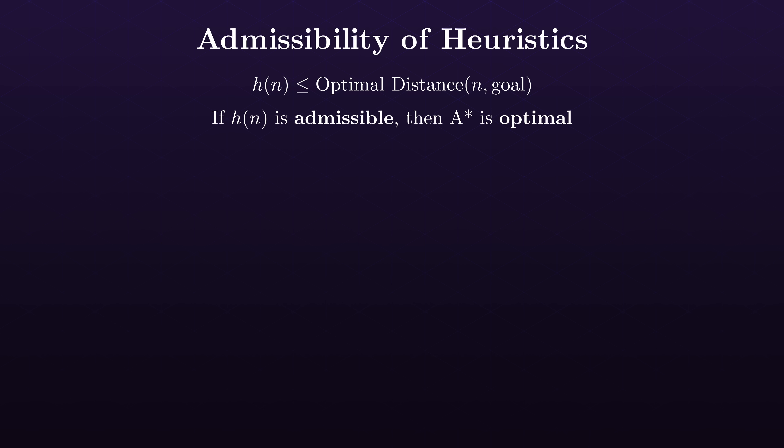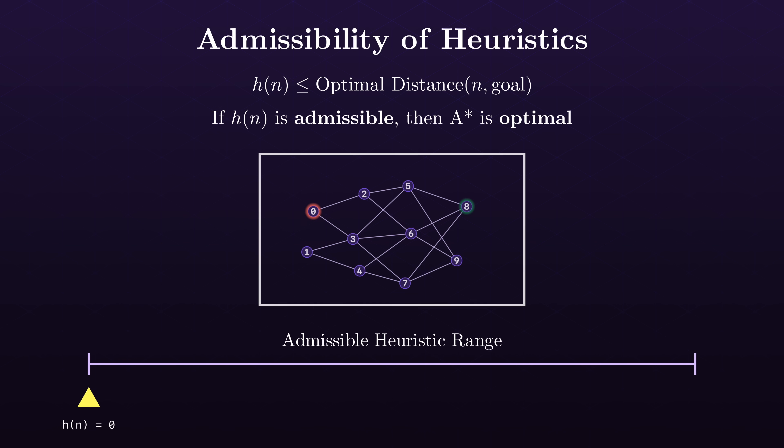A-star search as a whole is not too complicated of an algorithm. The real tricky part of implementing A-star search in practice is finding reasonably good admissible heuristics. For example, it's really easy to just set the heuristic to be zero, which is technically admissible. But if we do that, A-star search then reduces to just doing uniform cost search, so we don't get any benefit of the heuristic.